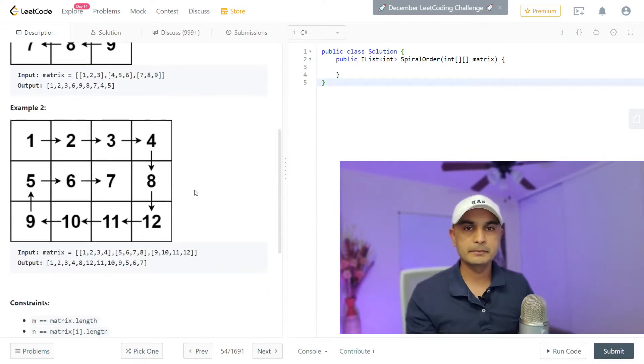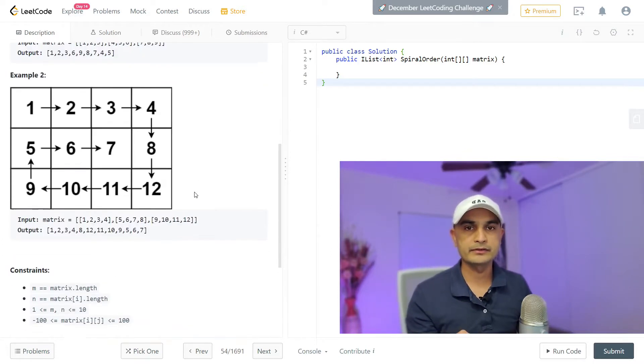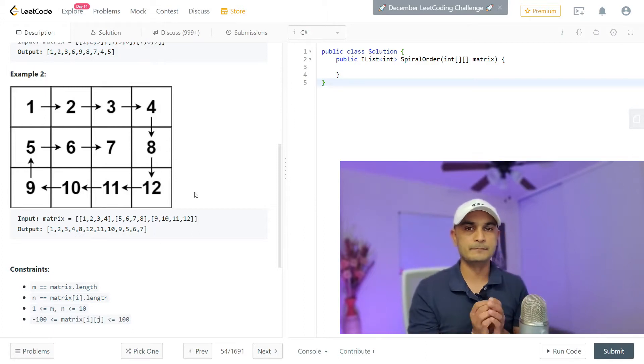Actually, we should look at the rectangular matrix rather than the square matrix because rectangular matrix has some edge conditions. It's better to tackle those edge conditions while we write code or solve the problem. So let's go to the whiteboard, look at the approach, and then as usual come back and run the code.